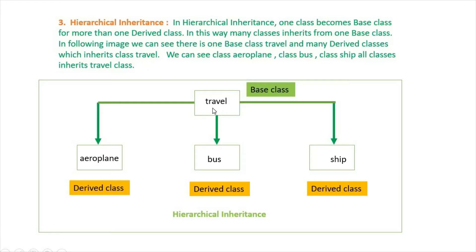Travel is one base class. Aeroplane is a derived class which inherits the Travel class. Bus is another derived class which inherits the Travel class. Ship is a third derived class which inherits the Travel base class. In this way, hierarchical inheritance happens.